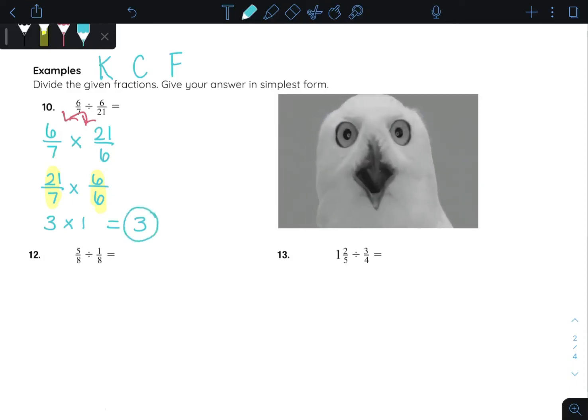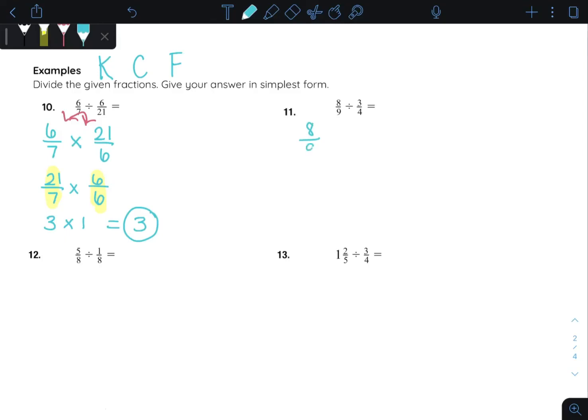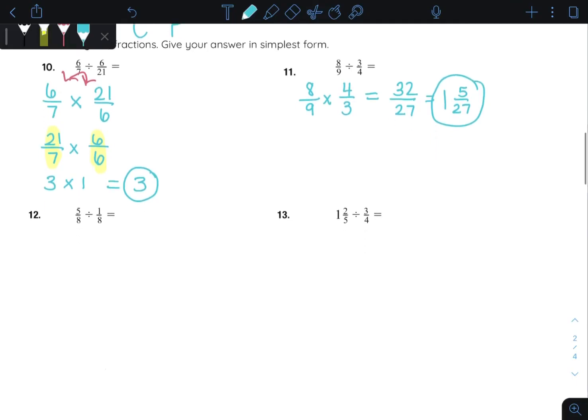Number eleven. Keep it, change it, flip it. I'm going to go ahead and multiply. Eight times four. Nine times three. Definitely could turn that into a mixed number. So one. And so that's one twenty-seven. And it's going to be five left over to get us up to thirty-two. So one and five twenty-sevenths.